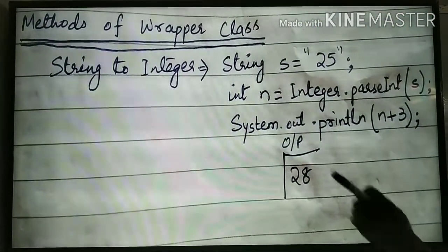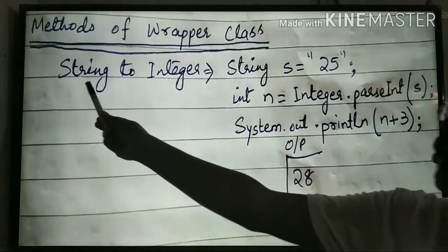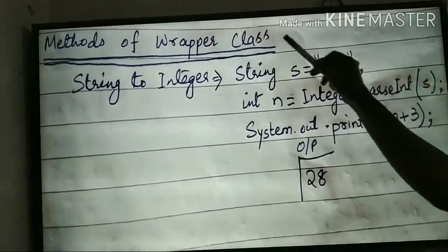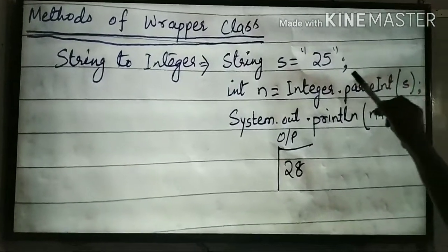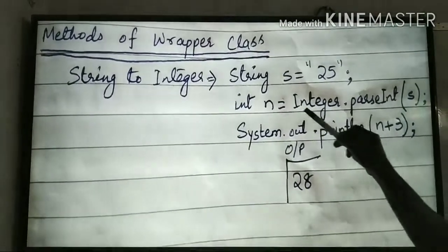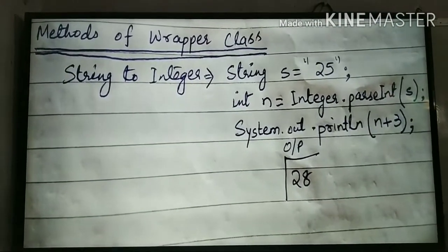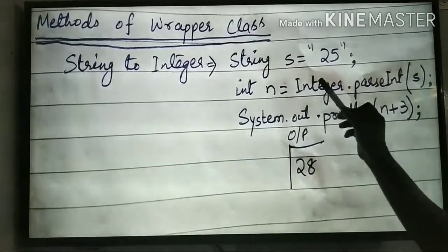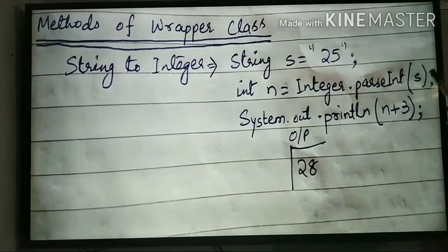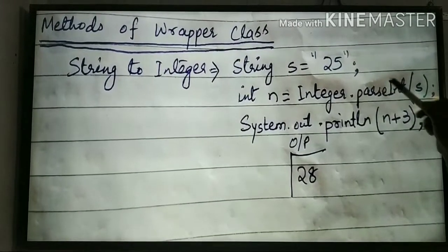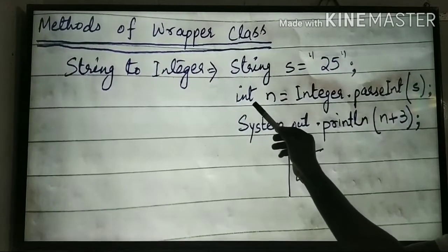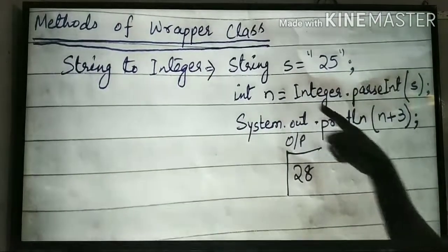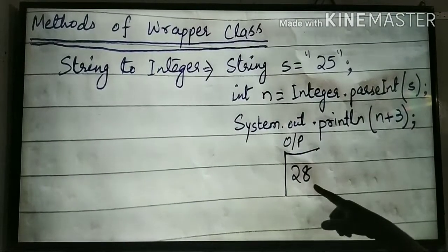The first method we will learn is how to convert a string into integer. For example: String s = "25" — within double quotes means it is of string type. Now we have the parseInt method of the Integer wrapper class. The parseInt method converts string type into int type. So int n = Integer.parseInt(s). S was 25 of string type, it got converted into int type and stored under variable n. Now n has the value 25 of int type. So 25 plus 3 gives the output 28.